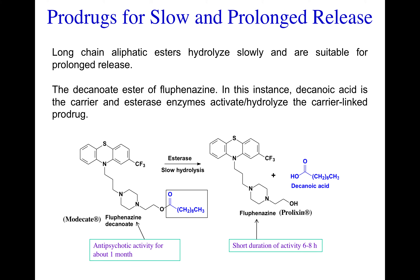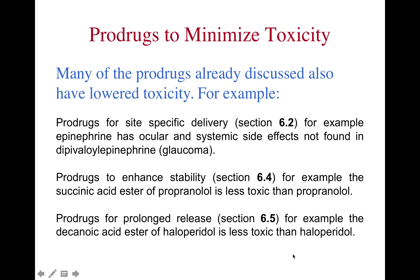This is another example — fluphenazine decanoate — that you can go through in your own time. It is again an antipsychotic drug treated with a similar approach to haloperidol, where they tried to make an antipsychotic drug with activity for about one month through an intramuscular depot injection. Without the prodrug approach, it has a short duration of activity of only six to eight hours.